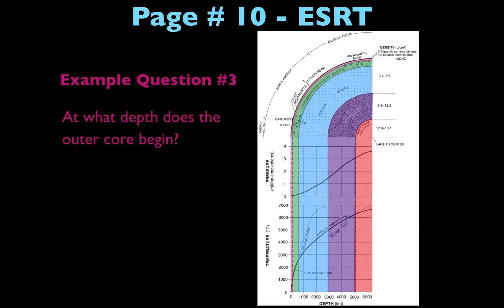Another example question: at what depth does the outer core begin? Start at the top part of the chart and locate the beginning of the outer core, then bring that down to the depth axis at the bottom. You'll see that it begins just slightly before the 3,000 kilometer mark, so a strong answer would be 2,900 kilometers.